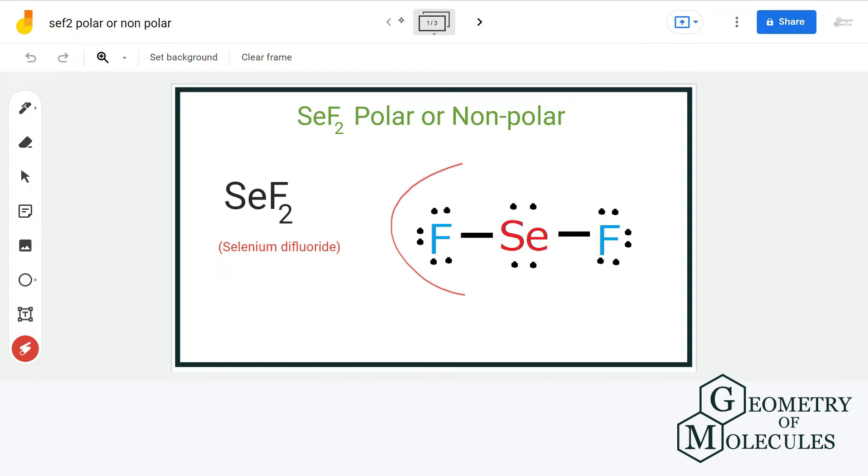This is the Lewis structure of SeF2, where selenium is forming two single bonds with fluorine atoms and it also has lone pairs of electrons attached to it.